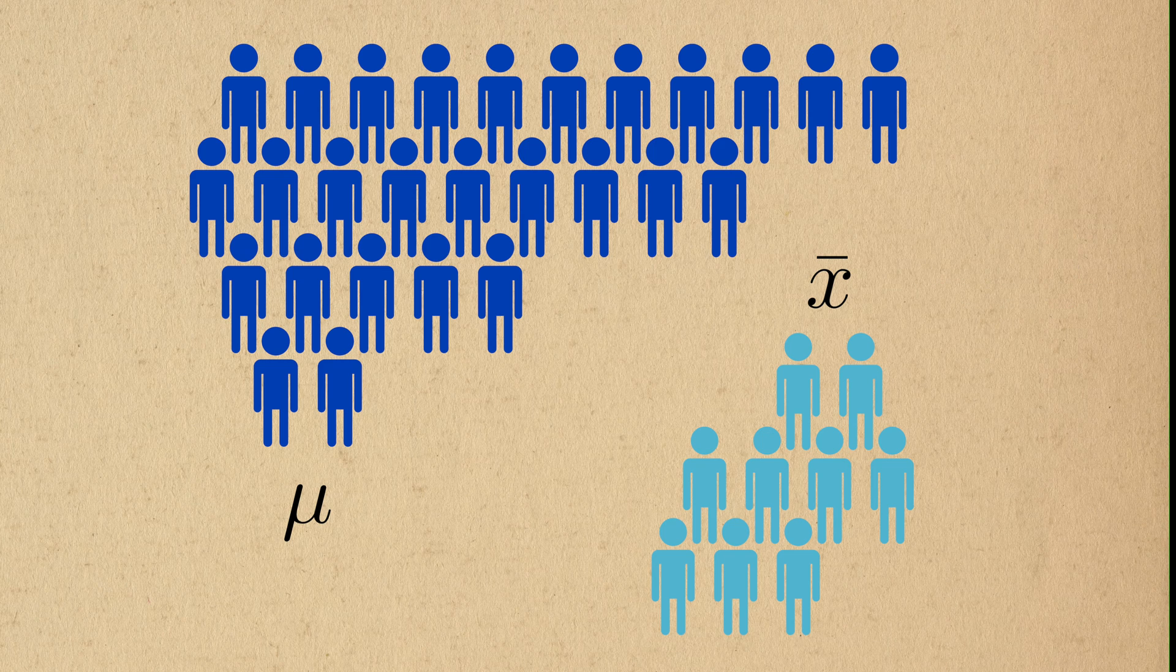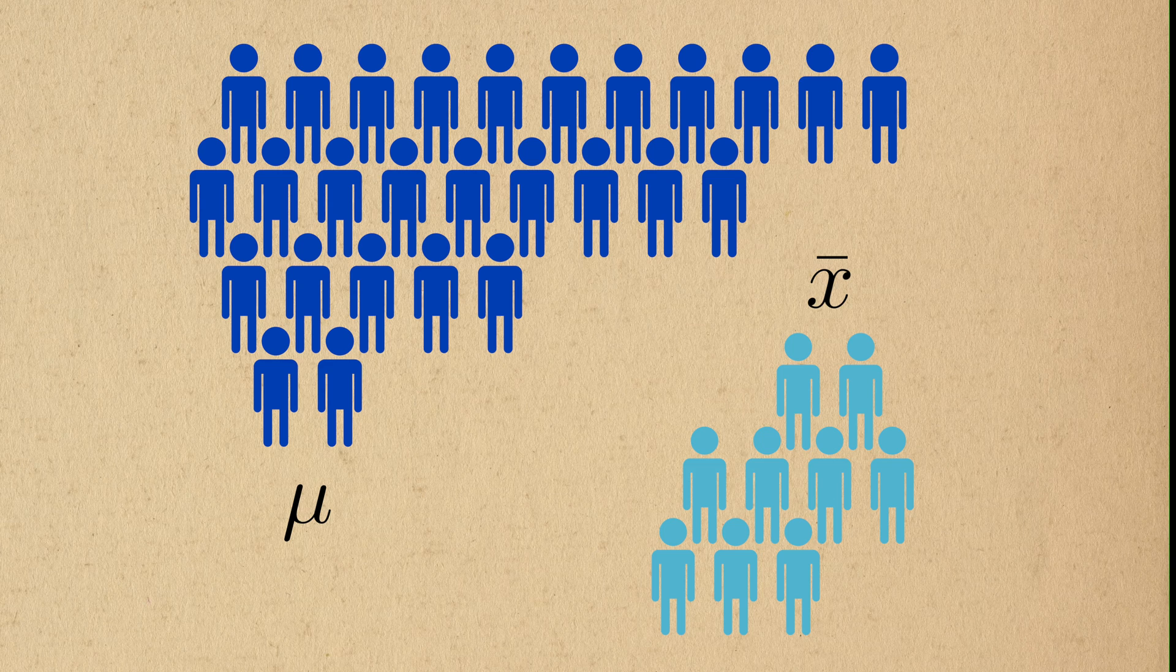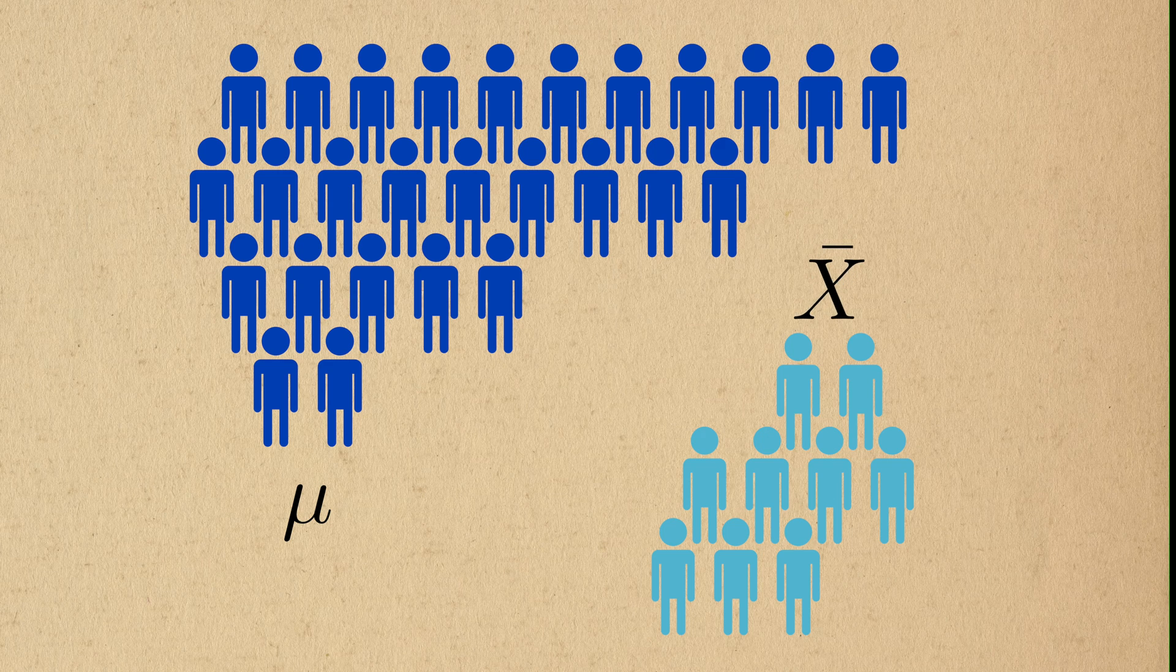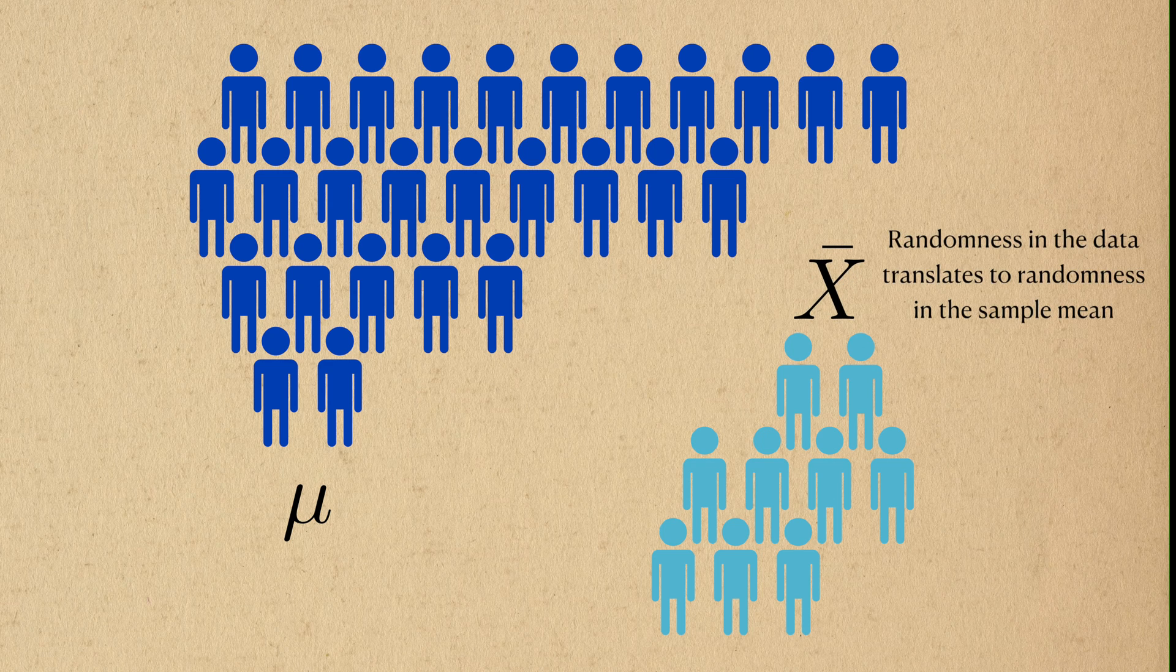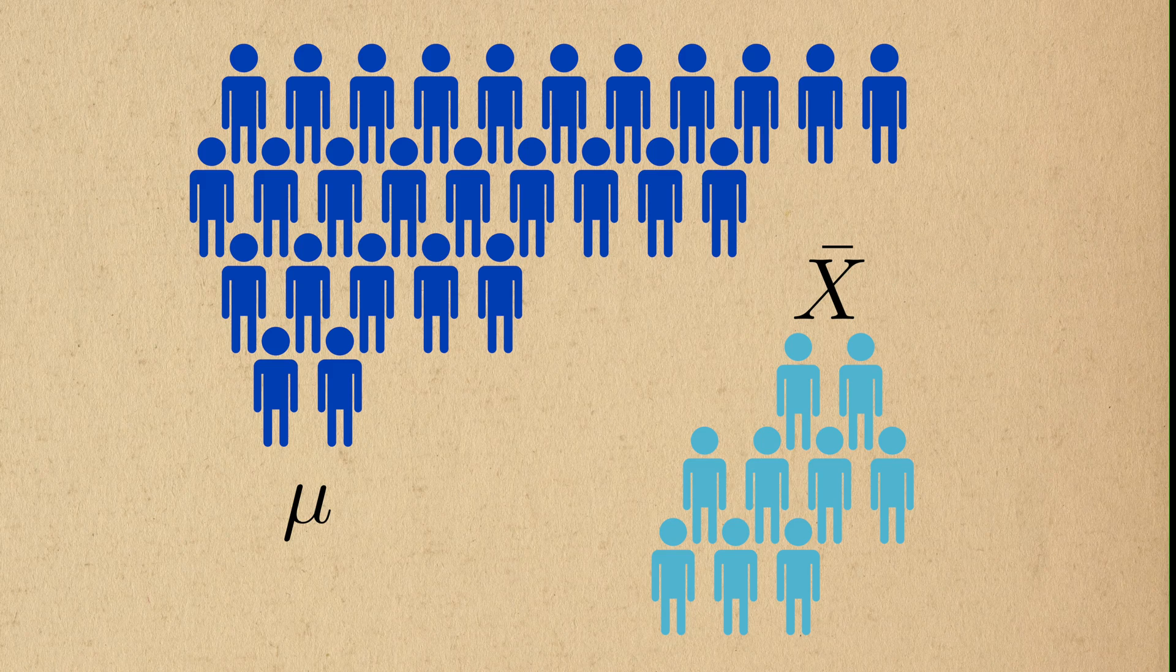We assume that populations have some degree of randomness to them, and as a result, there could be a wide range of values that the sample mean could take, by virtue of the data itself being random.